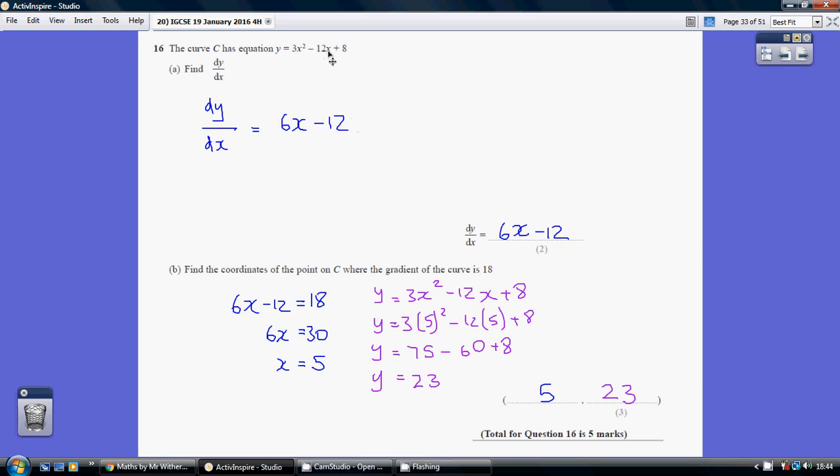And step 2, reduce the power by 1. x to the 1 becomes x to the 0, and x to the 0 is 1, so it's just minus 12 times 1, which is minus 12, and the constant just goes. So our dy dx is 6x minus 12.